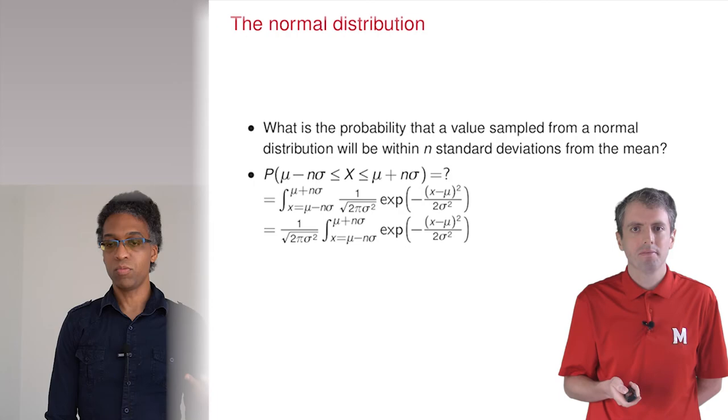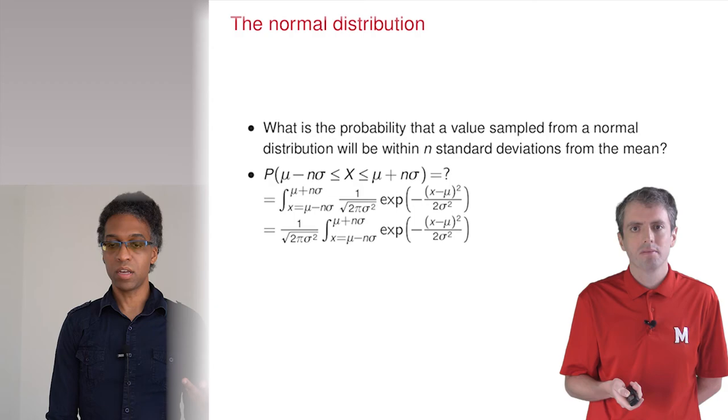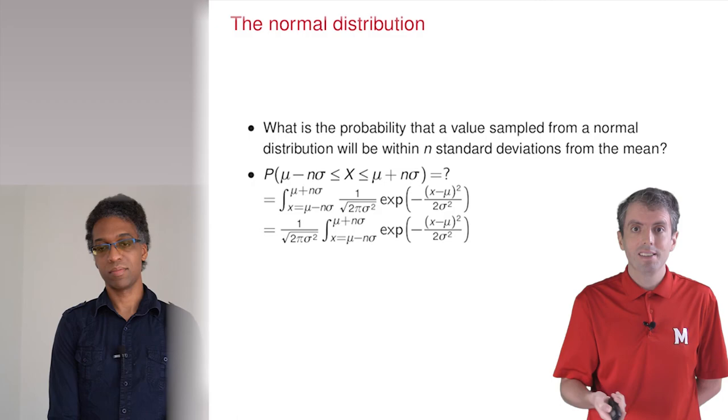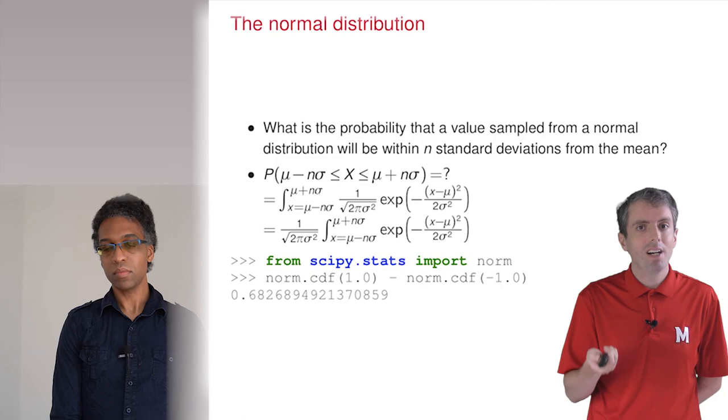Okay, so this would be between negative 1 and 1. The probability of it being less than 1 is pretty easy. We can call that directly. But then this includes the probability of it being less than negative 1. So we need to subtract that. Now you get 0.682.